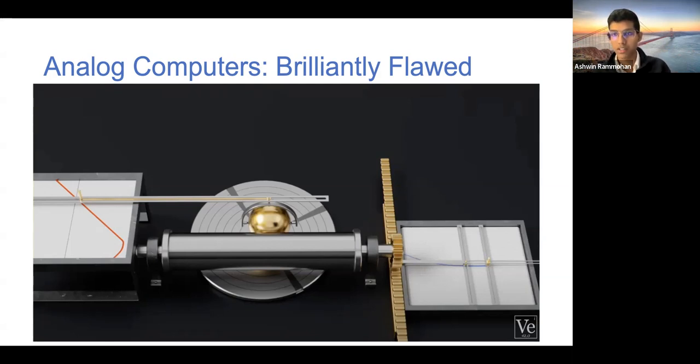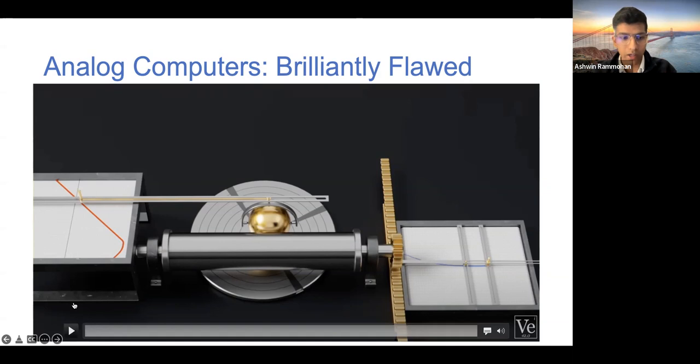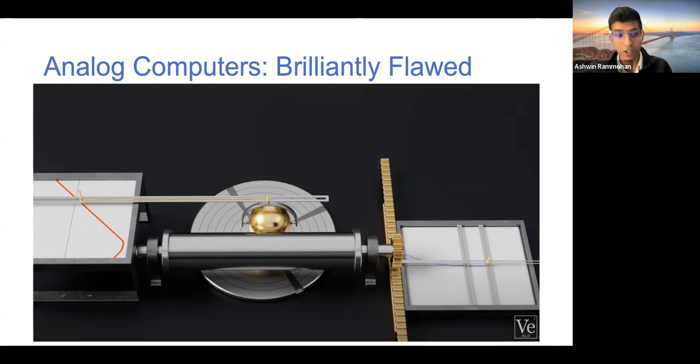And so what Lord Kelvin devised in this contraption is actually a mechanical calculator that calculates for a given frequency how much of that is actually contributing to the tides. And essentially, this is what's called a Fourier transform. It's figuring out how much of that eventual sinusoid or wave is attributed to a certain frequency. And I can play this video to you, and you'll just see how simple and elegant it is, yet how complicated a calculation it can actually perform.